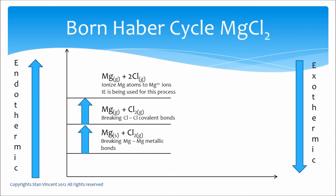We have changed magnesium to gas and chlorine to atomic gas. The next step involves changing magnesium gas into a dipositive ion. The energy required to change a metal in the gas state to a positive ion is called ionization energy — the energy required to remove an electron from a neutral gaseous atom. Since magnesium belongs to group 2 and forms a 2+ ion, we must supply both the first and second ionization energies to remove two electrons, giving us Mg²⁺.